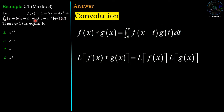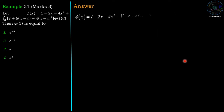The polynomial 3 + 6(x-t) - 4(x-t)² is a polynomial of (x-t), so f(x-t) can be considered as this polynomial. So this integration is the convolution between the polynomial and phi(x). To evaluate phi(x), we use the Laplace property: Laplace of f*g = Laplace of f into Laplace of g. We apply Laplace on both sides.